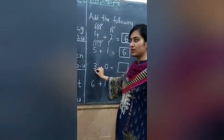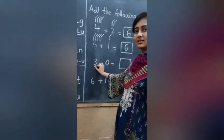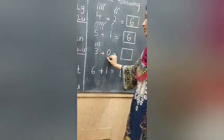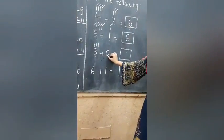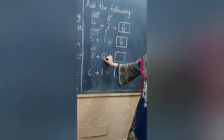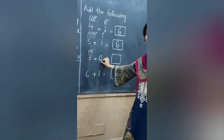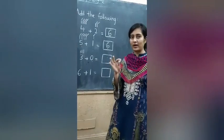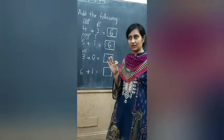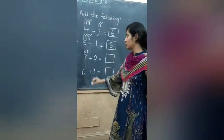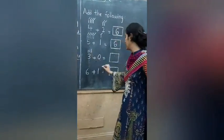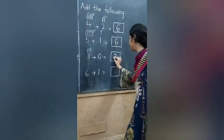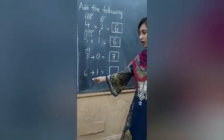Now next. Which number is this? 3. 1, 2, 3. Which number is this? 0. I told you in my previous video, 0 has no value. 0 is nothing. So the answer will be 3. As it is, we will draw 3.